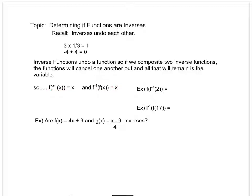Notice this is a representation of composite functions. So if I'm told that f of f inverse of 2, and I'm supposed to find out what that equals, I don't even need my functions, because by definition f and f inverse are going to undo or cancel each other out, so I should just be left with the value that got plugged in. Likewise, if I take f inverse of f of 17, my f inverse and my f are going to cancel out, leaving me with just 17.